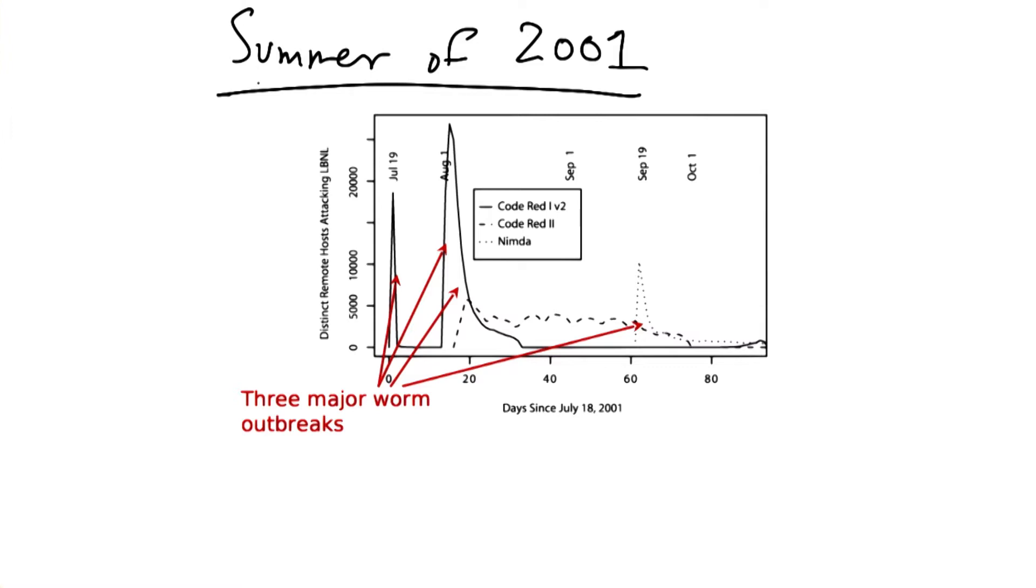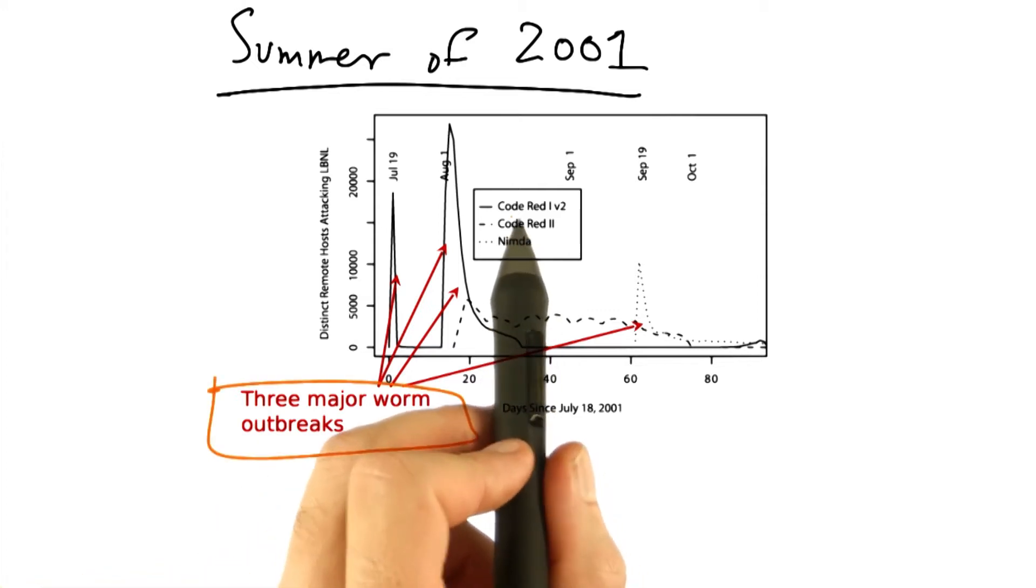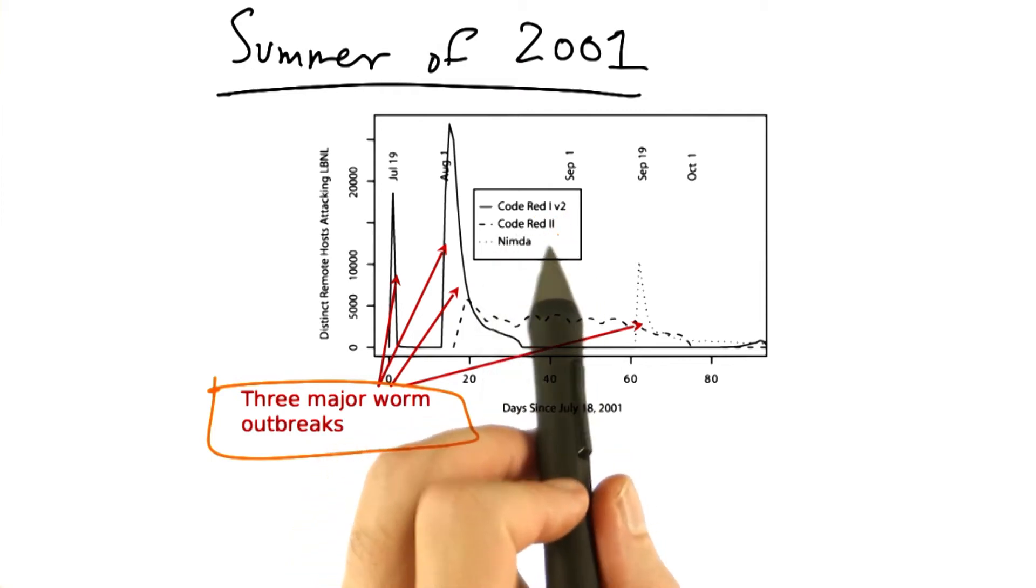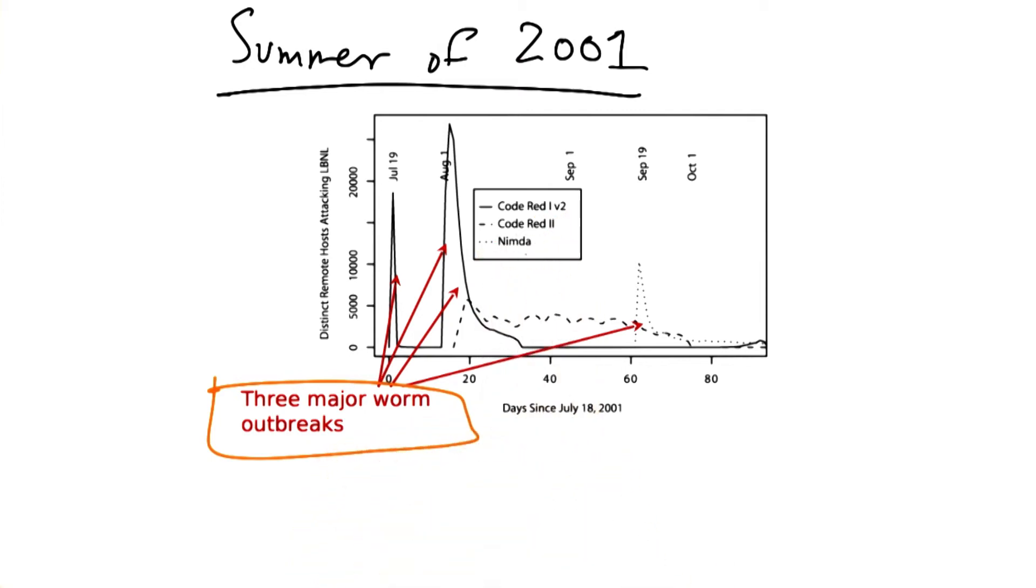The summer of 2001 essentially saw a new era in internet security with three major worm outbreaks. These three major worms were Code Red 1, version 2, Code Red 2, and Nimda. Let's take a quick look at each of these worms.